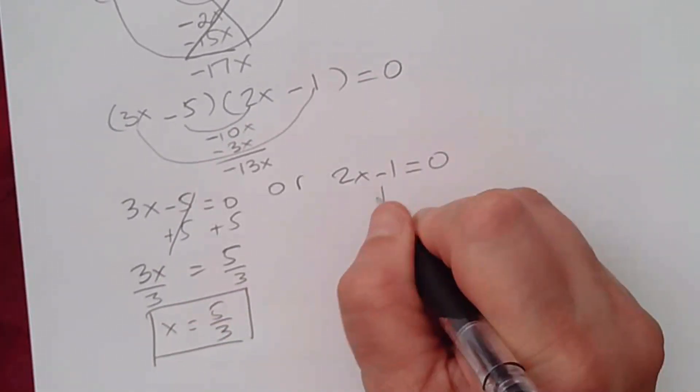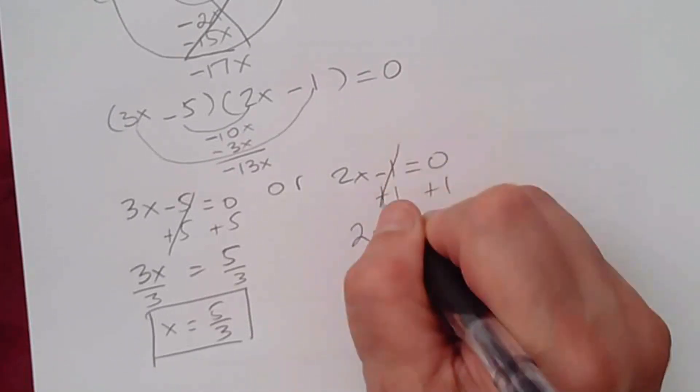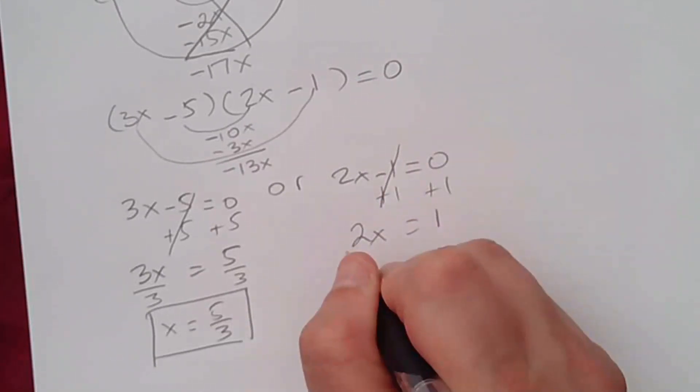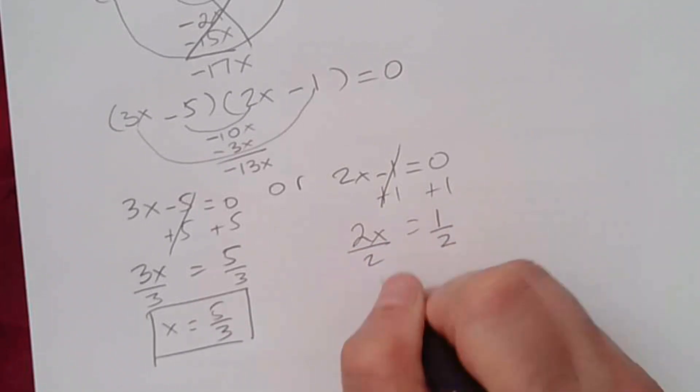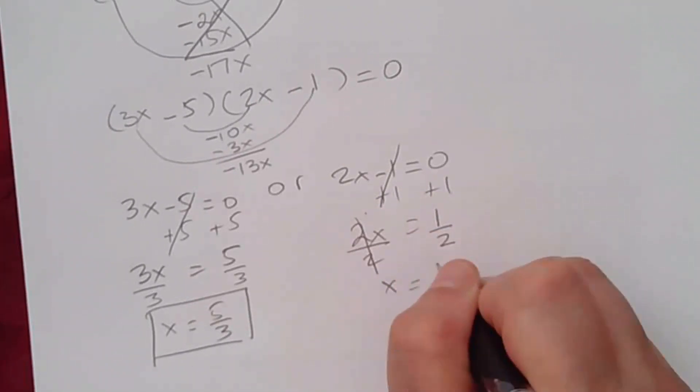You add 1 on both sides. You get 2x. This cancels. 0 plus 1, that's 1. You divide by 2 on both sides. You get x equal to 1 half.